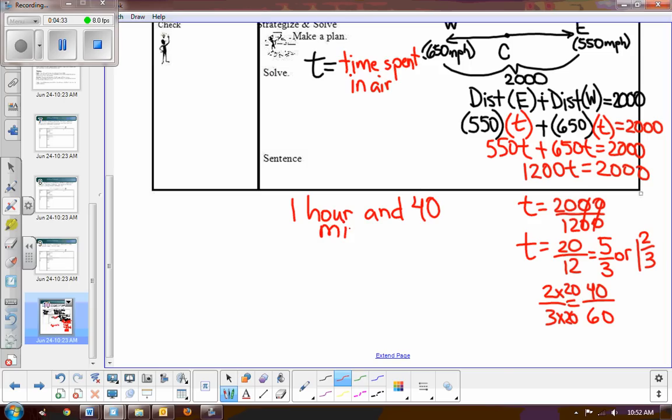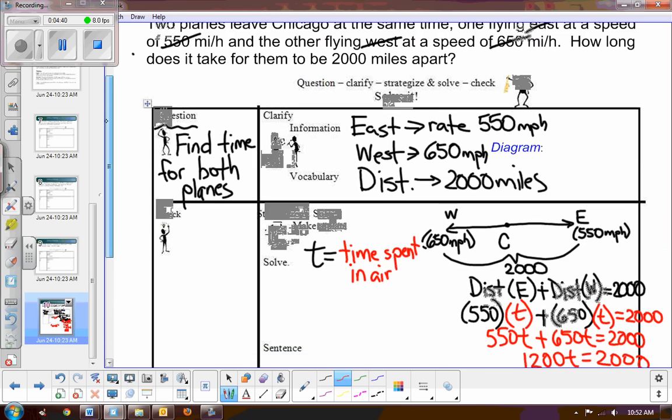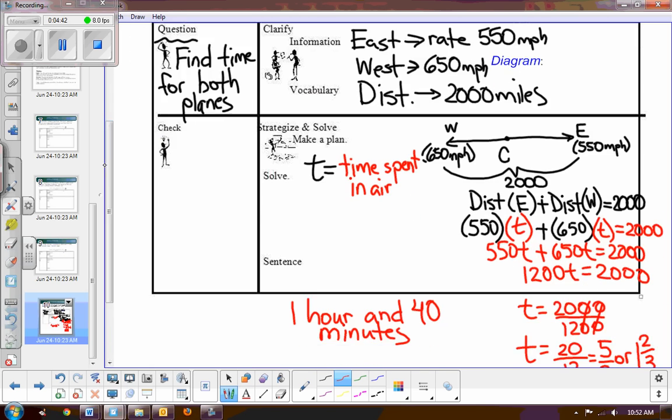Well, what's going on at 1 hour and 40 minutes? Make sure that you answer the question. So the question was how long does it take them to be 2,000 miles apart? It takes them 1 hour and 40 minutes. Thank you very much.